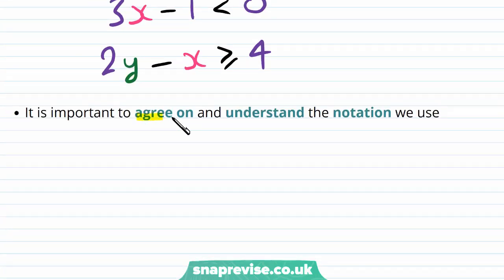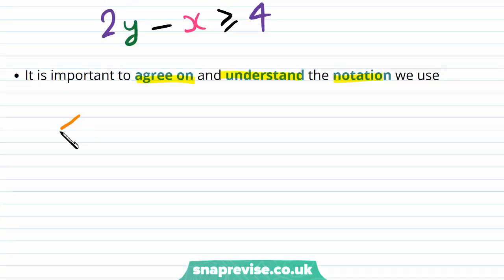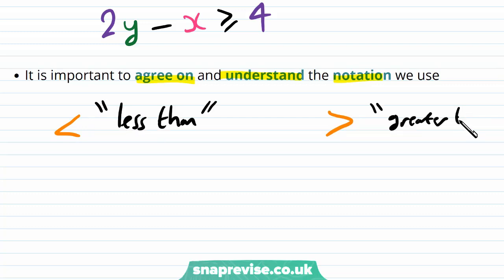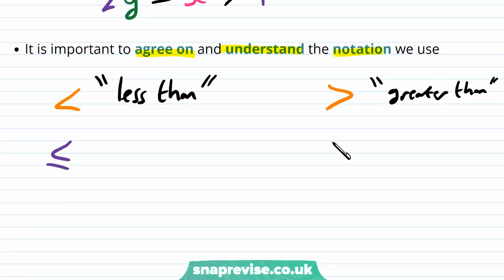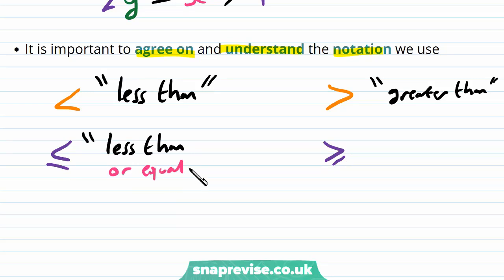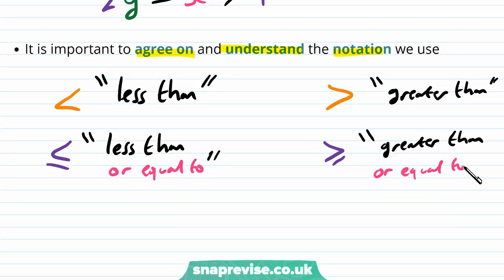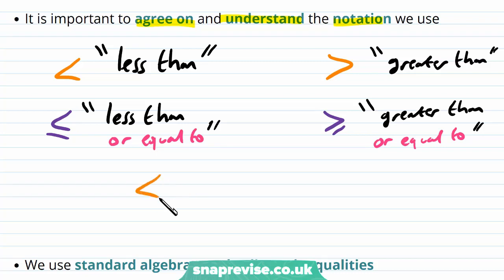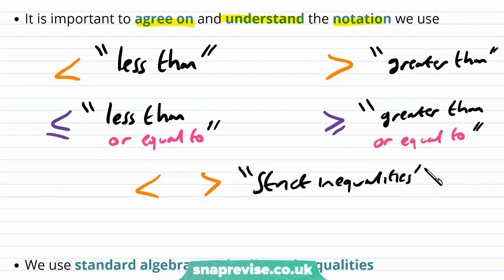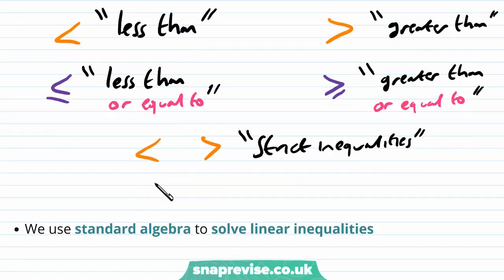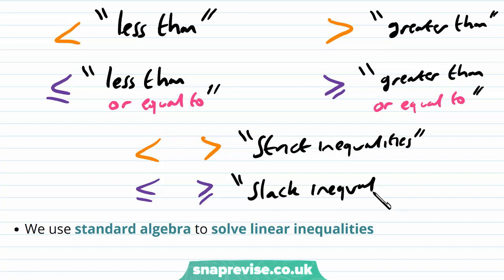It is important to agree on and understand the notation we use. The symbols < and > mean less than and greater than respectively. The symbols ≤ and ≥ mean less than or equal to and greater than or equal to respectively. The strict forms (< and >) are called strict inequalities, while ≤ and ≥ are called slack inequalities.